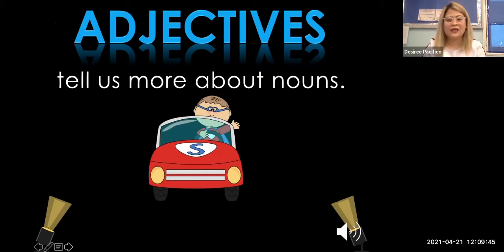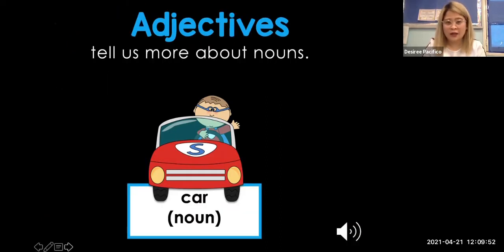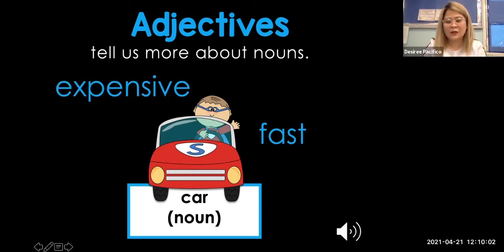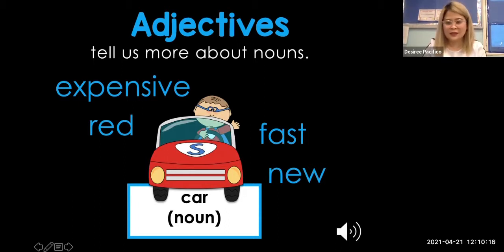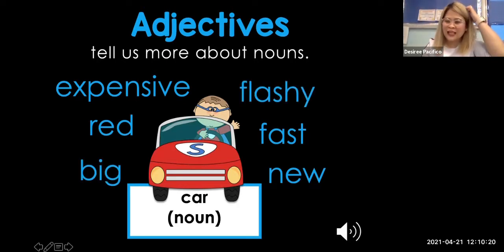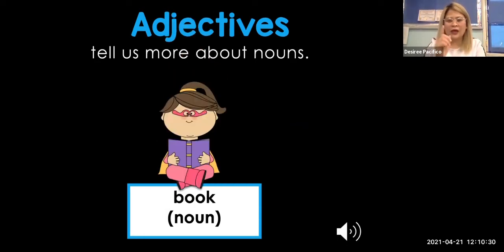Adjectives tell us more about nouns. So it wouldn't be just a simple car. We have a car as our noun — name of a thing. An adjective describes how fast it is, how expensive it is, its color — red, whether it is new or old — it's new. What else? Is it small or big? It is big. And is it flashy? The words here are expensive, red, big, flashy, fast, and new.